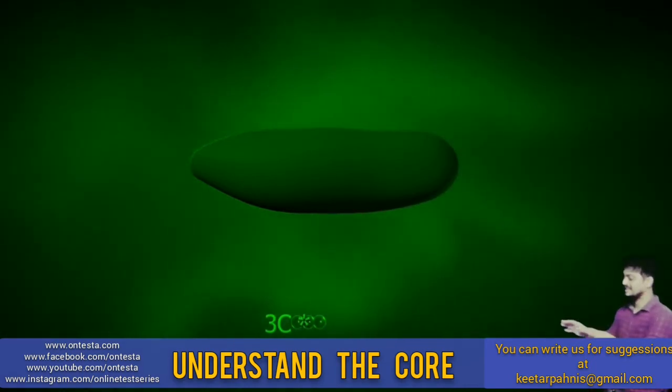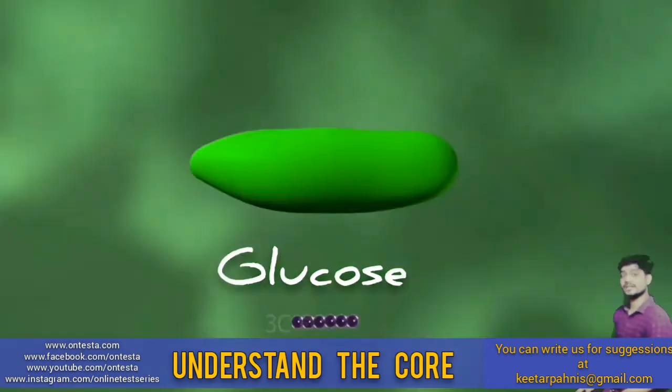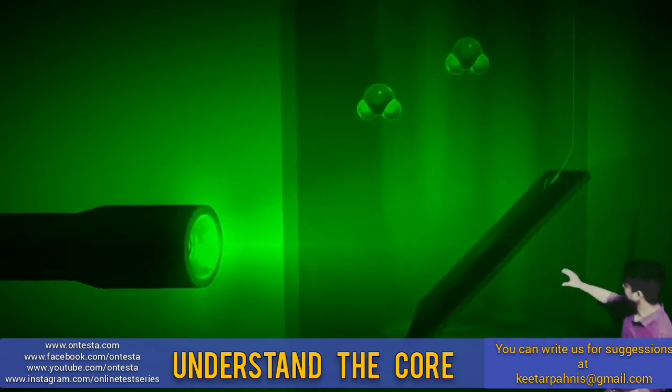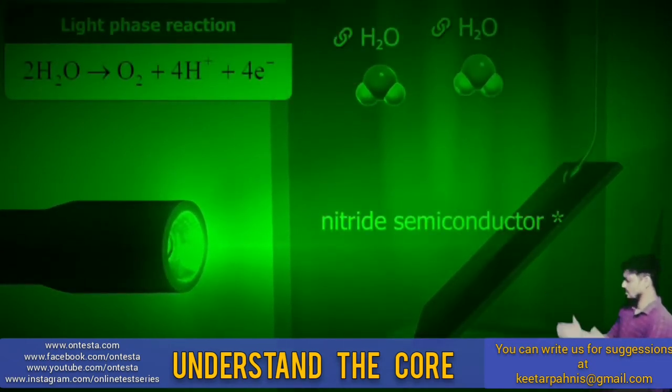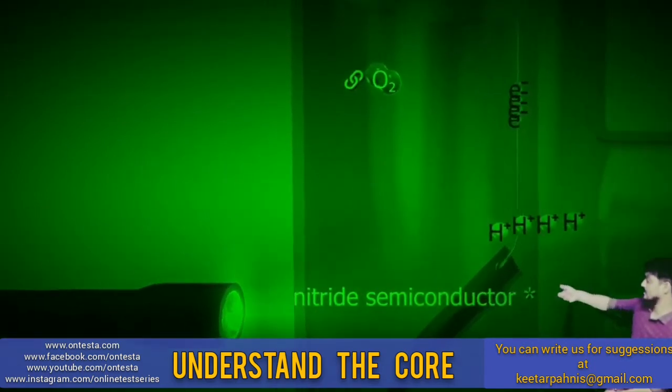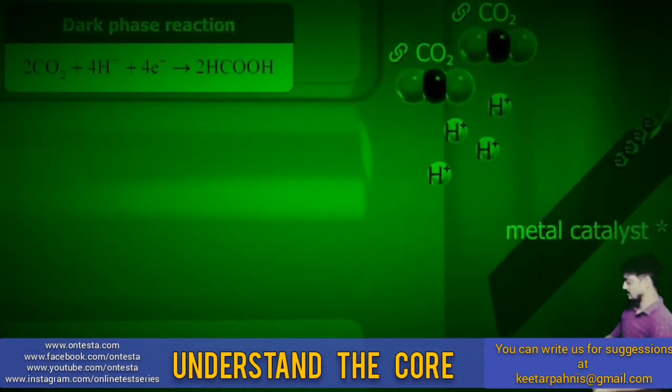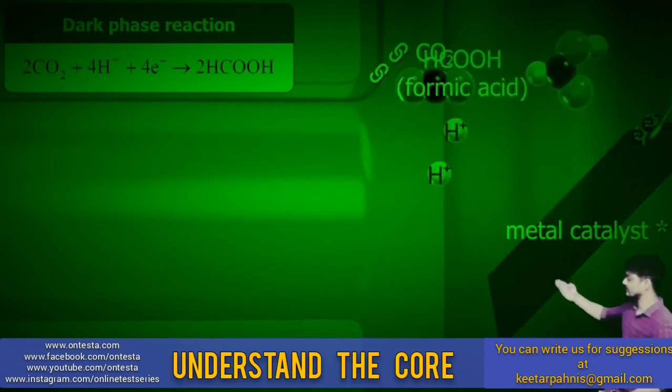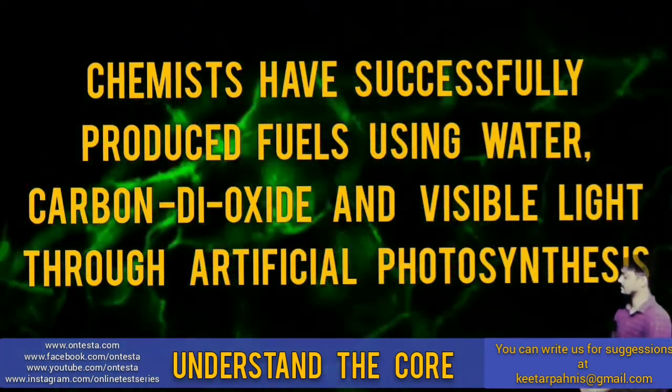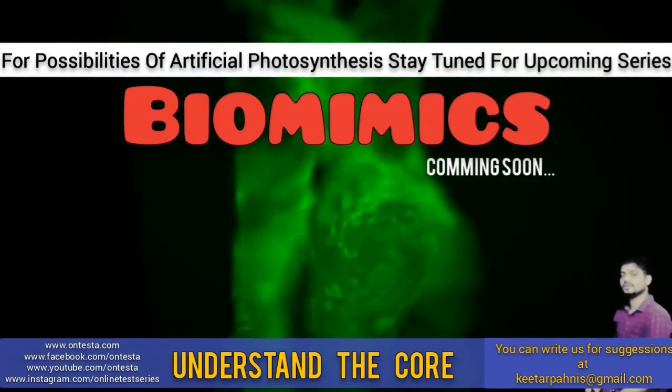To understand the core concept of photosynthesis, let's create an experimental setup. Here you can see that the light reaction phase is mimicked by providing light energy to a nitride semiconductor. This can also split the water molecules. This can create a proton gradient and electrons to move. This can generate proton motive force. Here, instead of carbohydrate, formic acid is formed in a similar way. Chemists have also successfully produced fuel using water, carbon dioxide and visible light. To know more, stay tuned for the upcoming series, Biomimics.